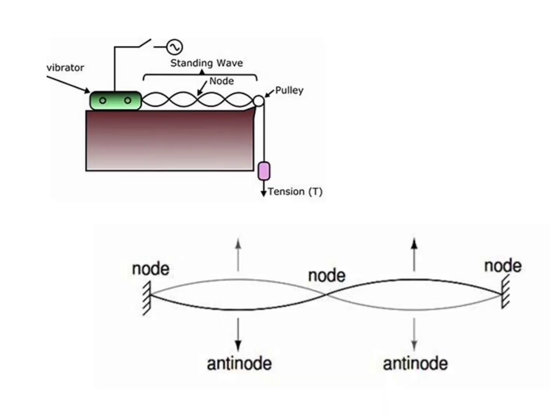We will have a quick review of what we have learned so far. Standing waves will be produced in a stretched string when it is set into vibration by a vibrator. Our aim is to find the frequency of this vibrator, and as we have seen, we could observe nodes and antinodes in our experiment.